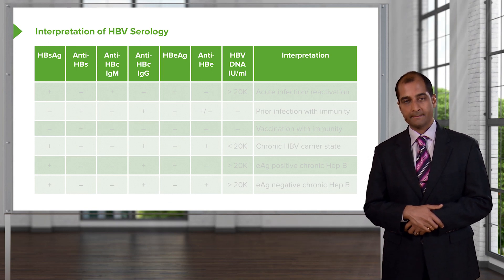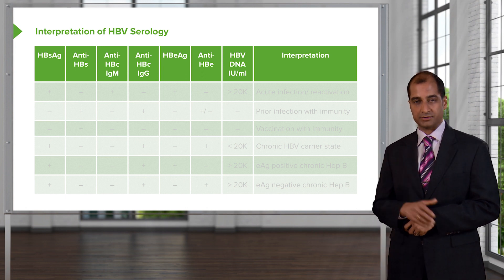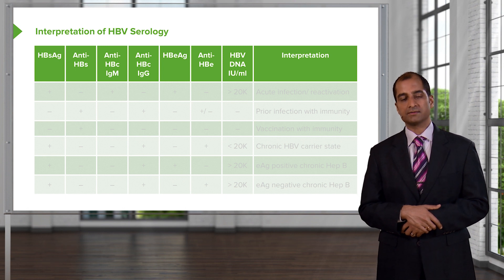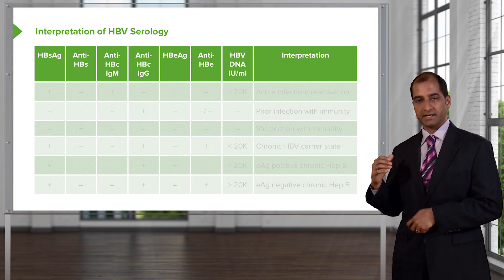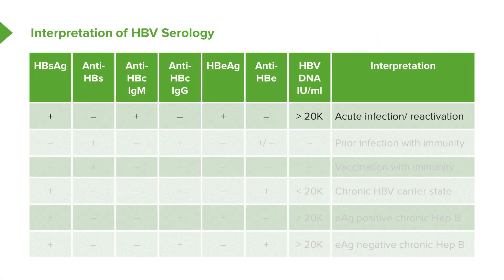Now, interpretation of the hepatitis B serological table. The topic for the entire table is hepatitis B, with the different components across the top depending on what's going on with your patient. Beginning with acute infection or reactivation: hepatitis B surface antigen shows up quite early in the symptomatic period. Anti-HBs is negative — that shows up later.